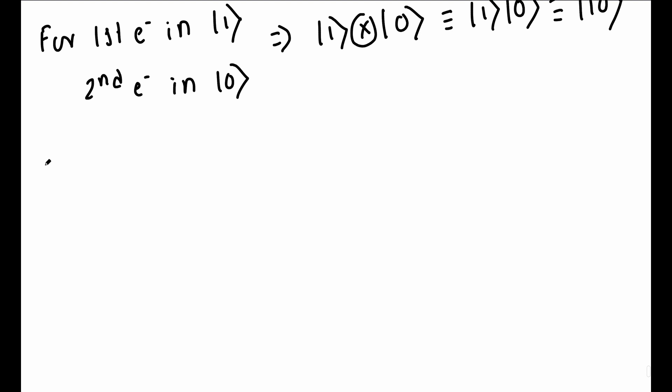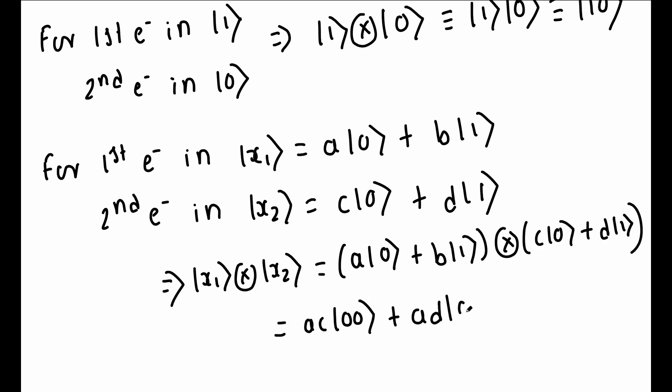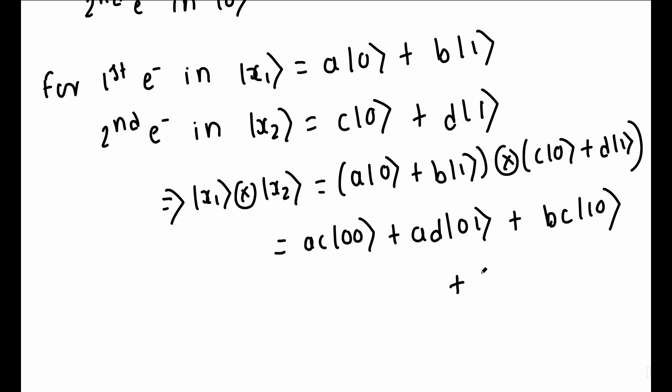Further, if the first electron is in state ket x1, which is equal to a into ket 0 plus b into ket 1, and the second electron is in state ket x2, which is equal to c into ket 0 plus d into ket 1, this combined state is represented as ket x1 tensor product ket x2, which is equal to ac into ket 00 plus ad into ket 01 plus bc into ket 10 plus bd into ket 11.